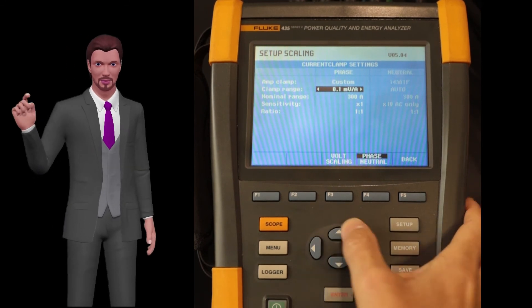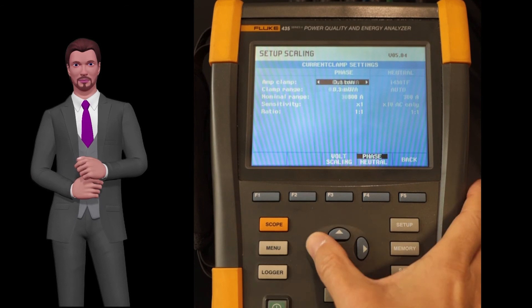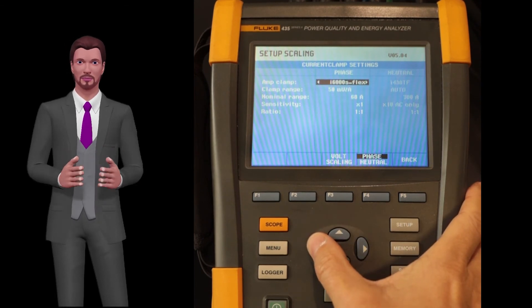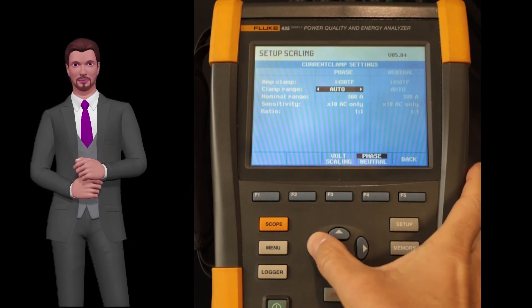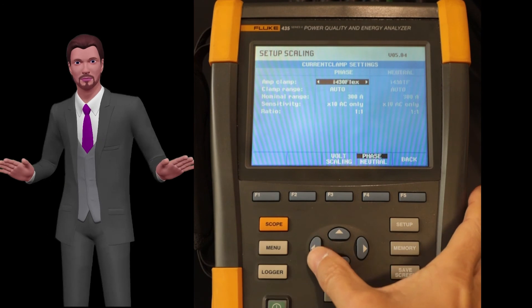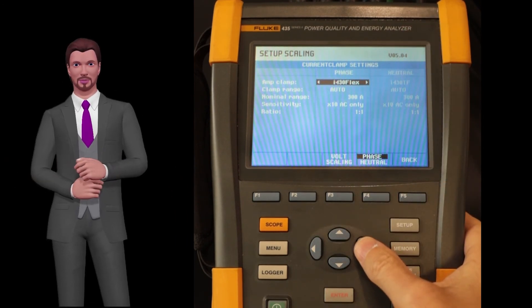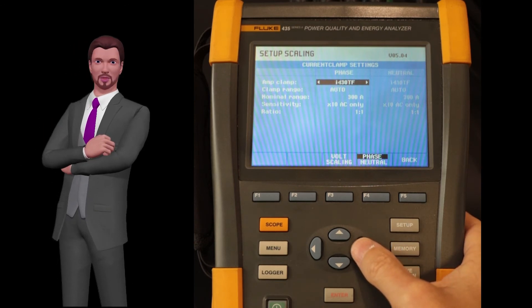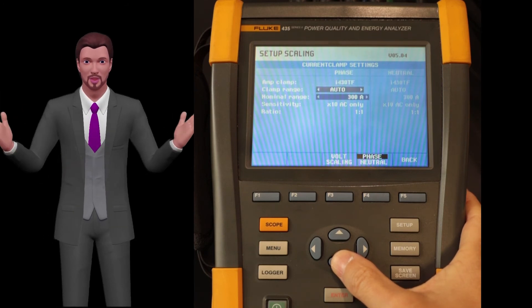In my case, I select the I-430 TF probe and since it is a flexible probe self powered by the unit itself, in the clamp range option auto appears, a parameter that in this case we cannot change. You can also see a probe called I-430 flex, but this probe was the probe included with the obsolete 435 series 1, so it should not be selected. Once the probe is properly selected, as I say in my case the I-430 TF, we go down to the parameter called nominal range.